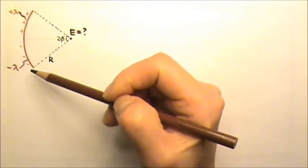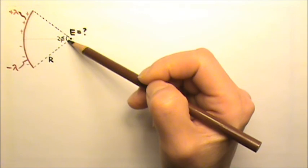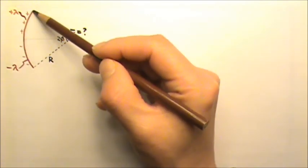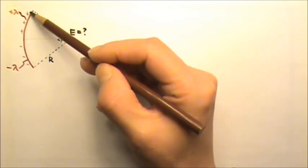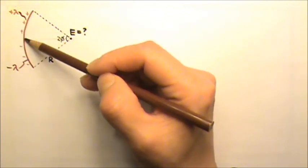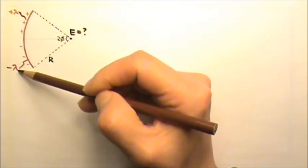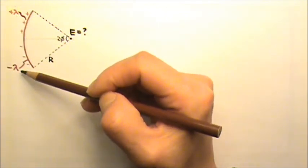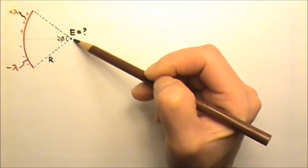An arc of charge has a radius r and an angle 2φ. The top half of the arc has a linear charge density positive λ, while the bottom half has a linear density of negative λ. Find the electric field at the center of the arc.